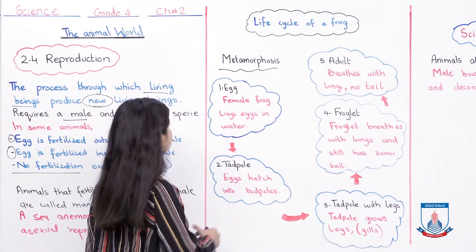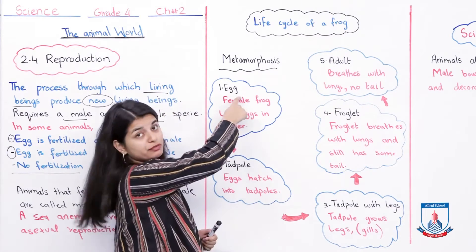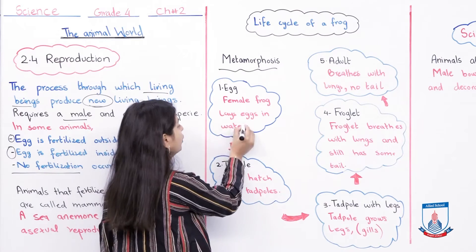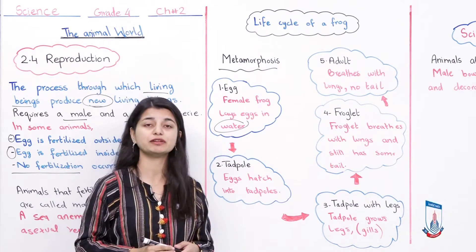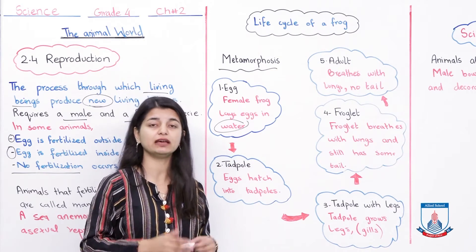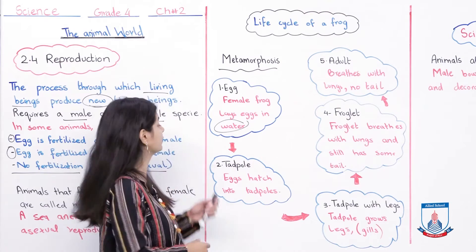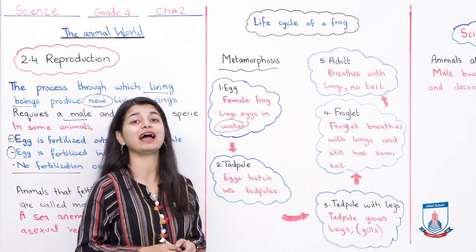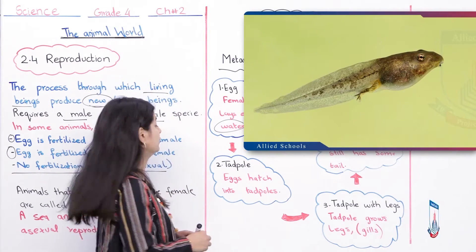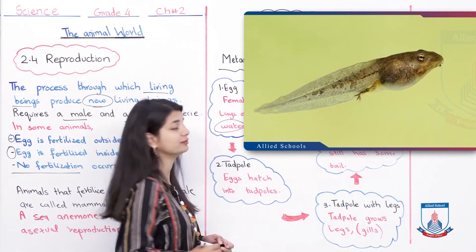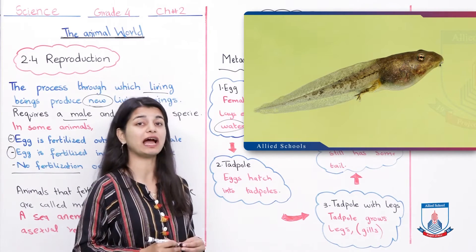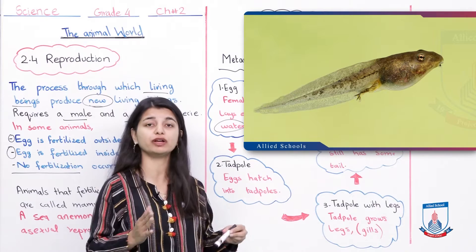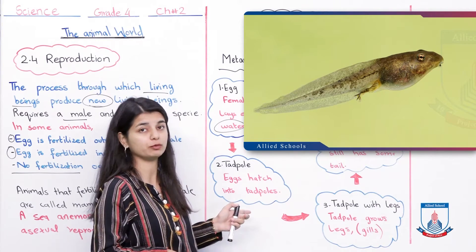How does the frog life cycle start? First, a female frog lays eggs in the water. The female frog deposits her eggs in the water. The next step is the tadpole stage. The egg hatches into a tadpole. Look at the image — that is what a tadpole looks like.